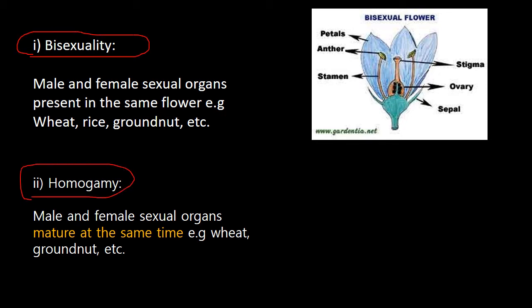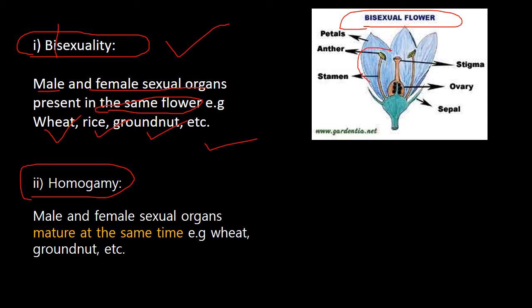There are certain terms related to self-pollination we need to know. The first is bisexuality. As the name implies, bisexuality means both male and female sexual organs are present within the same flower. It is found in wheat, rice, groundnut, etc. In a bisexual flower, you have the male reproductive part called the anther and stamen, and also the female part.